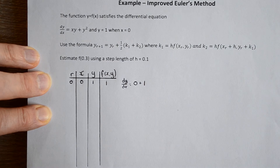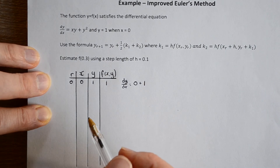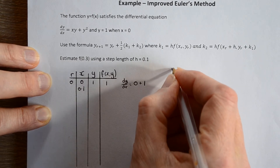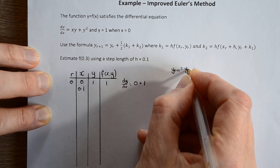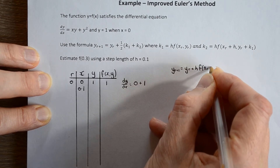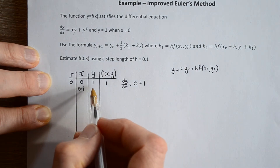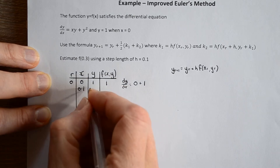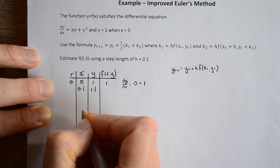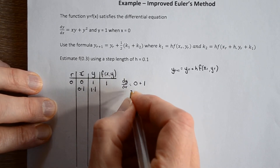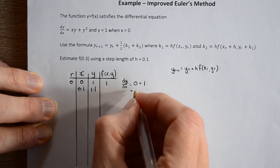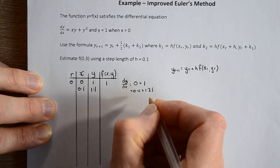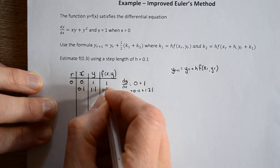That's the gradient at the start of the first step. What about the end of the first step? We need to find our y value at the end — our step is 0.1, so we know our x value, and we use Euler's method to find the next y value: simply the gradient times the step length 0.1, added on to our initial y value. So the gradient at the end of the first step is x times y plus y squared, and that is 1.32.